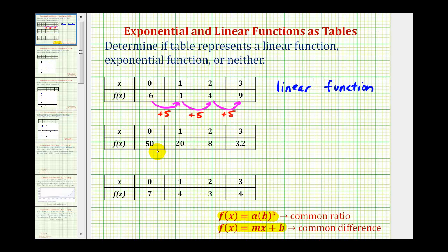Looking at our second table, the first function value is 50, the second is 20, the third is 8, and the fourth is 3.2. To check to see if it's linear, we'll find the difference between the first two function values. 20 - 50 is equal to -30, which means if it's linear, the pattern would have to be subtracting 30 each time, but we can quickly see that 20 - 30 is not 8, so it cannot be linear, so now we'll test to see if it's exponential.